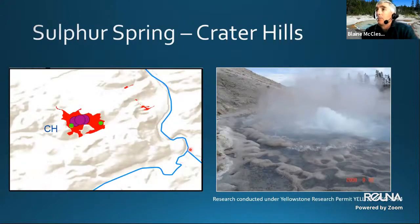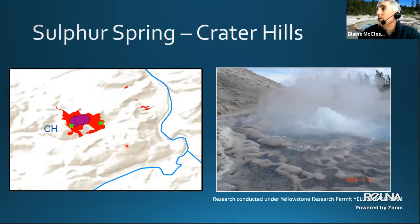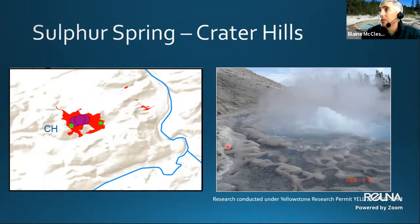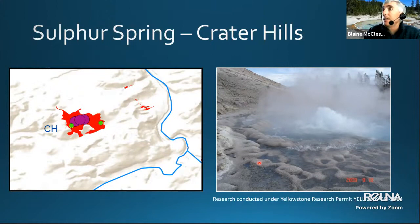Another area with disparate water types is Crater Hills, in the northeastern quadrant of the caldera. Sulfur Cauldron and nearby features have the highest chloride and geothermometer temperatures anywhere in the park — close to 300°C — and appear to represent the most direct upward leakage of fluids. The arsenic concentration in Sulfur Spring typically ranges from about 4.5 to 6.5 milligrams per liter, making it regularly the highest concentration in Yellowstone aside from the 17 mg/L outlier measured at Ragged Hills.